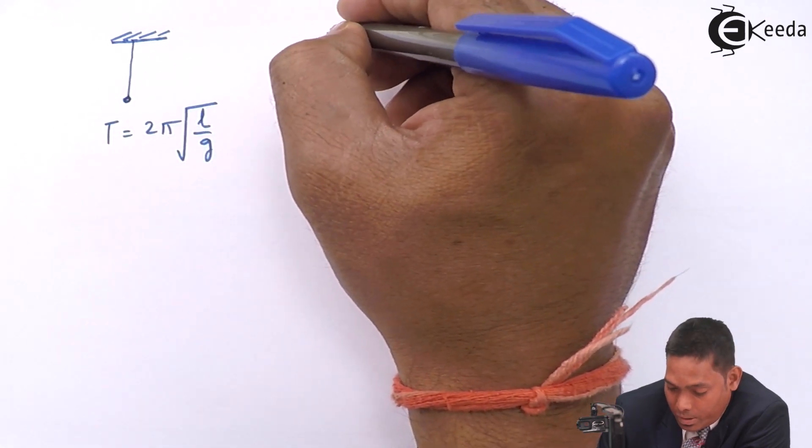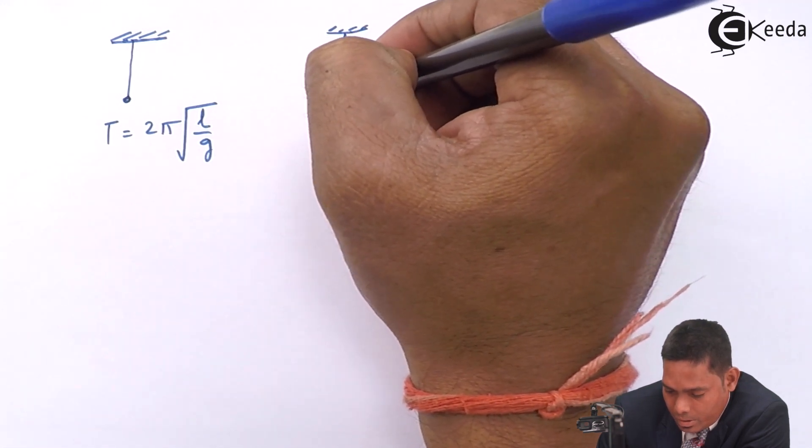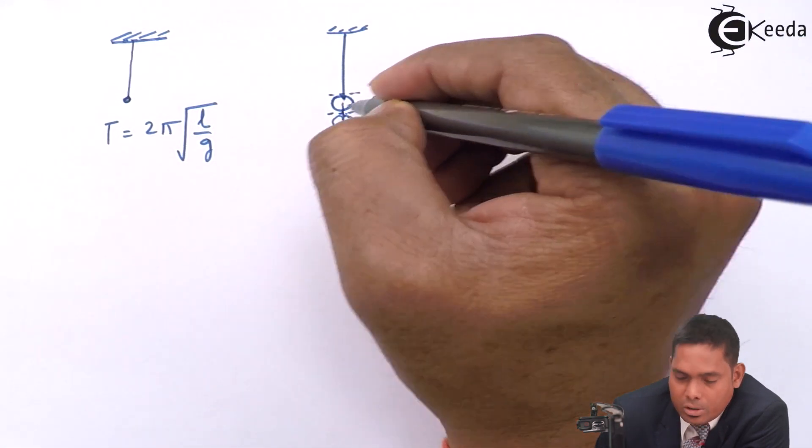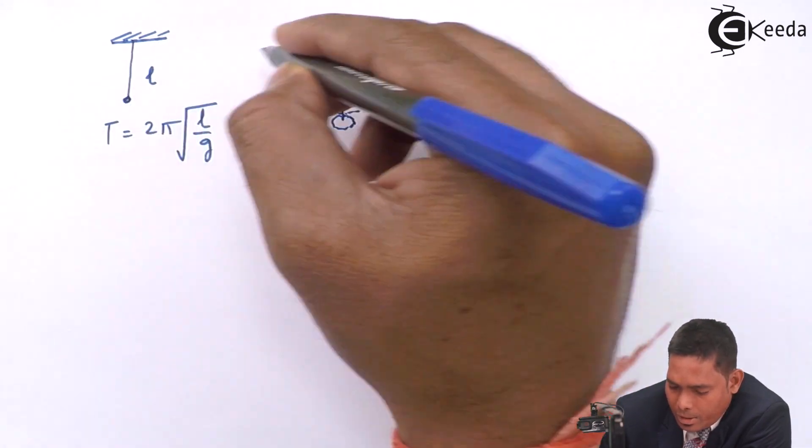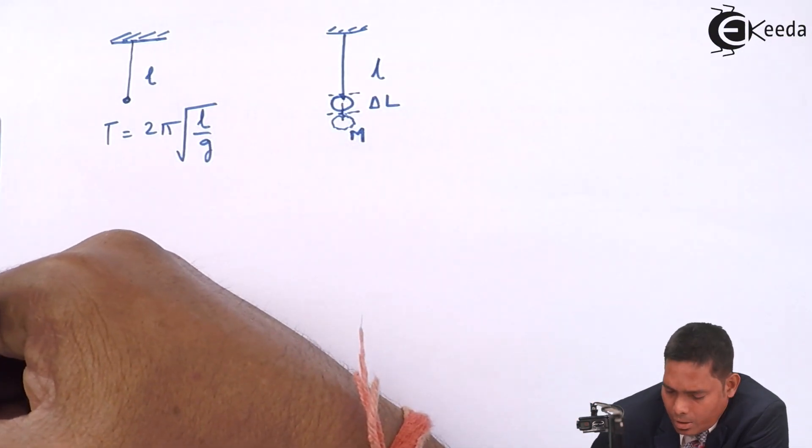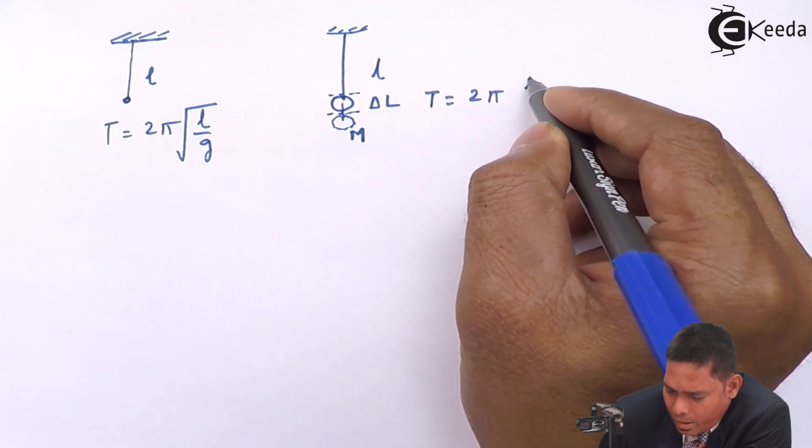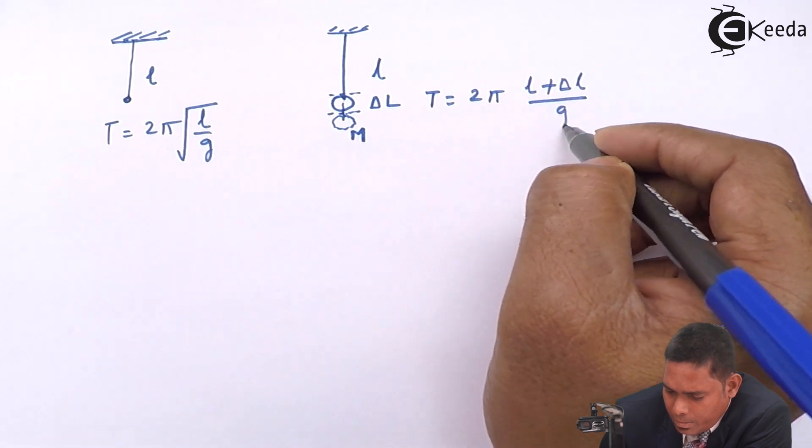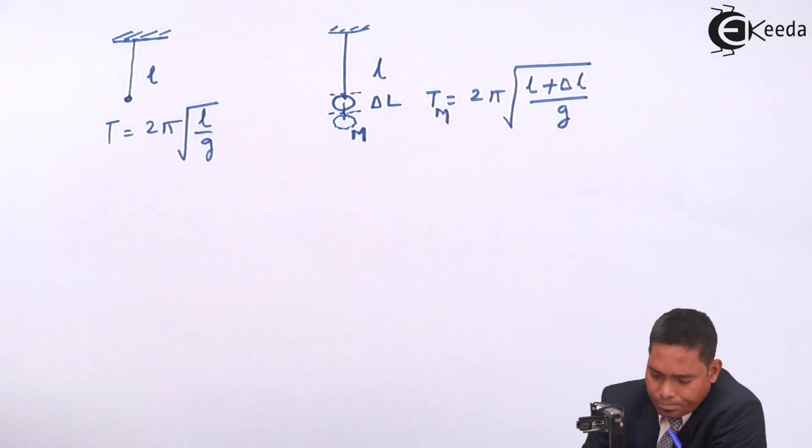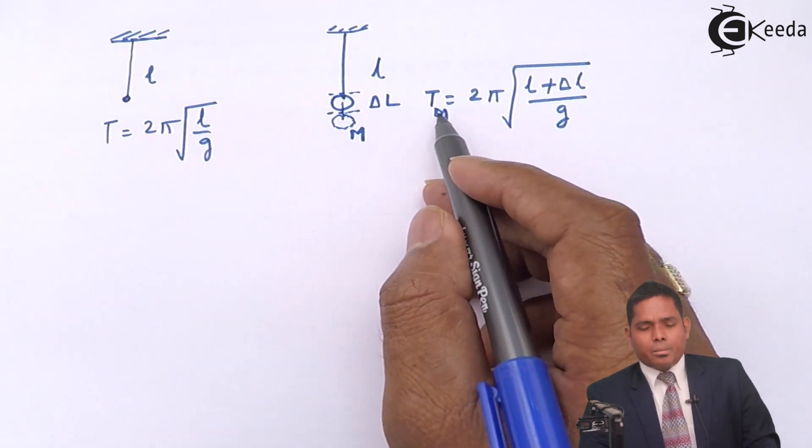Now in the second situation, when a mass is attached, the extension occurs. Suppose the part comes to this place. Now this is suppose the extension is delta L. And here the length is L. Here also the length is L, but this is the extension produced because of this mass. Then here the time period I can write as Tm equals to 2 pi under root L plus delta L over G, because the effective length. This time period I will call Tm.